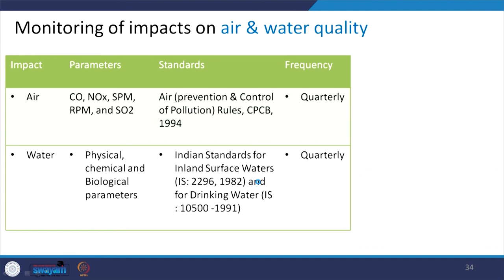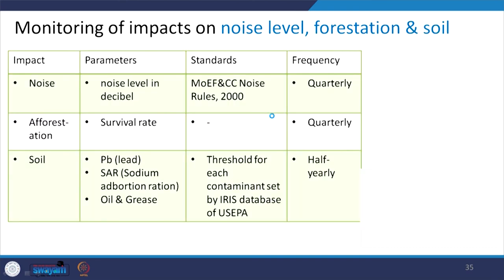Even during construction and after project completion, monitoring must occur at certain locations. Air quality monitoring at quarterly frequency covers parameters: carbon monoxide, oxides of nitrogen, suspended particulate matter, respirable particulate matter (PM10, which has serious health impacts), and sulphur dioxide — checked against standards. Physical, chemical, and biological parameters of water are also monitored quarterly. Noise, afforestation, and soil activities are monitored quarterly. Soil quality parameters — sodium adsorption ratio, oil and grease in soil — are monitored half-yearly.